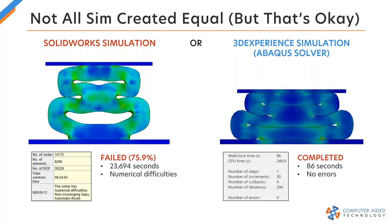Those of you who may have used SOLIDWORKS simulation before — it's a wonderful tool, I've been using it for almost 10 years — but it does tend to struggle when you start getting into really high strain applications or applications where there's a lot of sliding contact, a lot of areas of a model that come into contact or separate. This is really the next logical step from SOLIDWORKS simulation to move to 3D Experience simulation. You can see a quick side-by-side comparison of the same model between both. SOLIDWORKS simulation took a decent amount of time to fail due to numerical difficulties, where the 3D Experience general contact essentially solved it in less than two minutes.